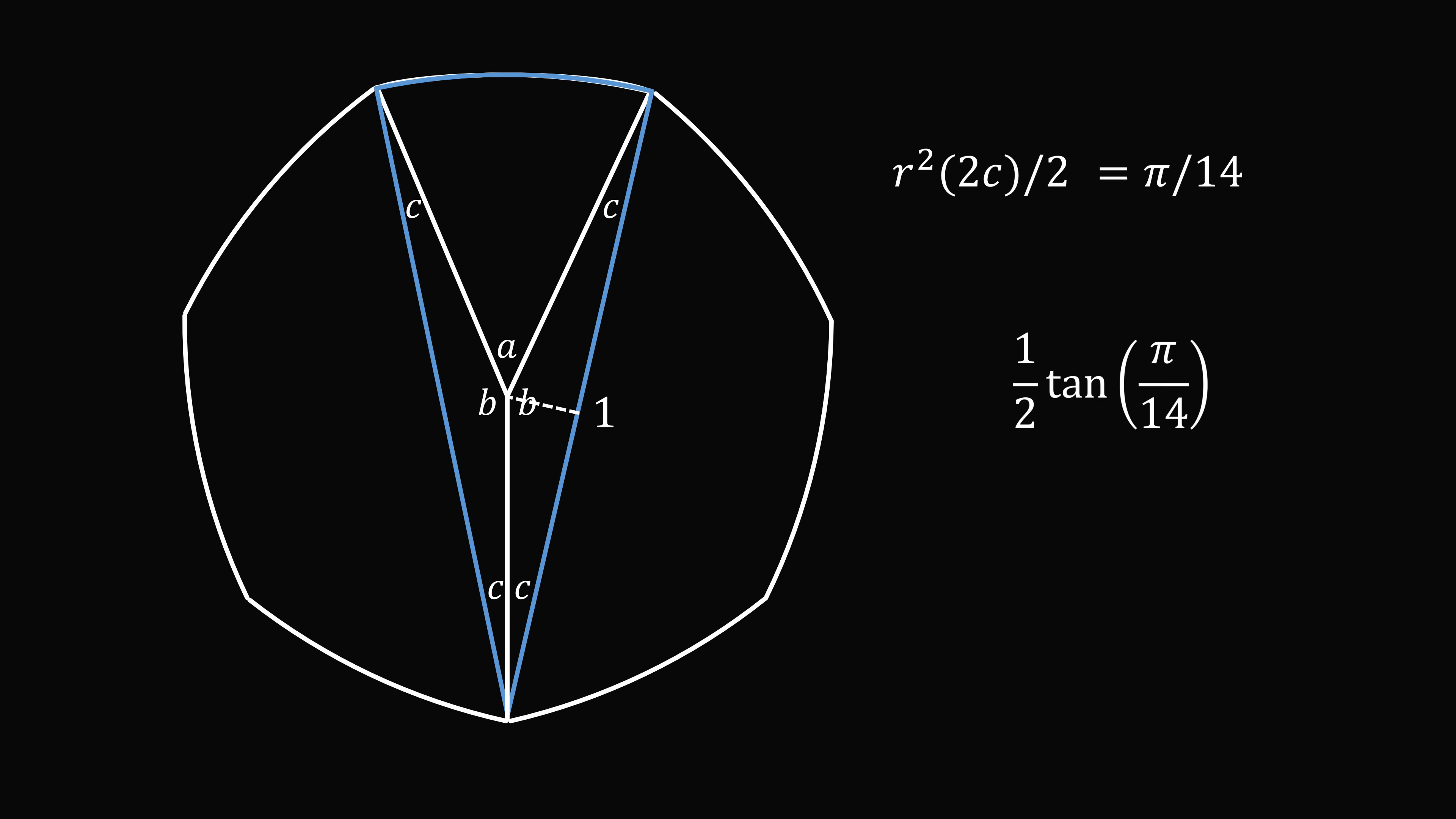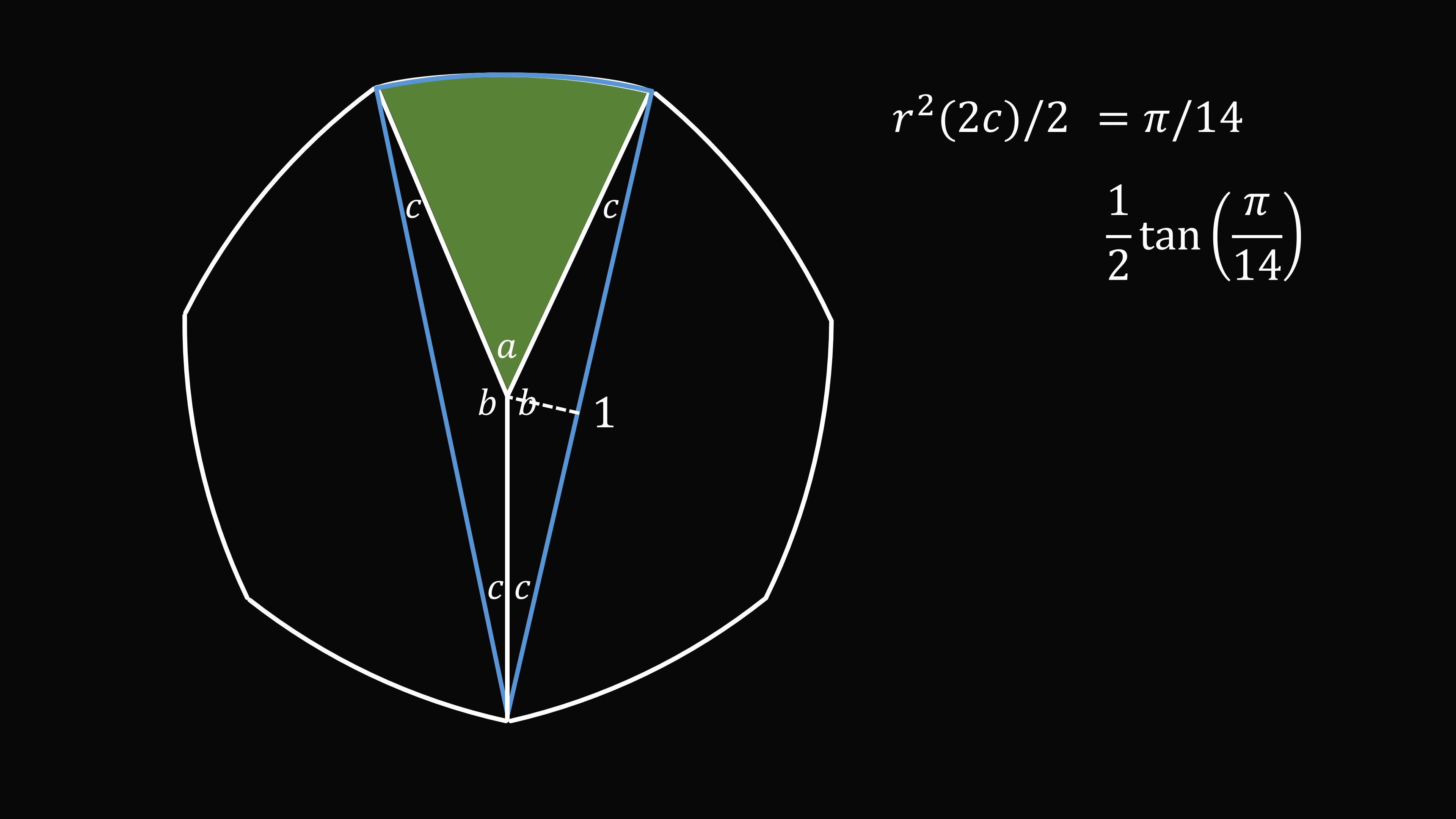So we now take the area of the circular sector, subtract the areas of two triangles, and we get the area of this wedge, and that will be equal to pi over 14 minus 1 half times the tangent of pi over 14. To get the area of the entire coin, we multiply this by 7, so we get 7w is equal to pi over 2 minus 7 over 2 times the tangent of pi over 14. And that's the answer.